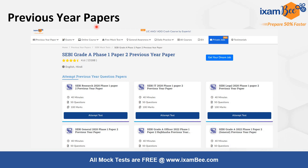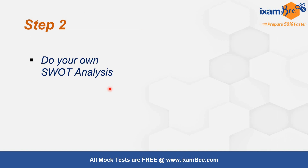You can find the previous year papers on our website. Under the previous year papers tab you will find papers for Paper 1 (QR/DI/GA), Paper 2 (Law), and also for descriptive English. You can also find PDFs attached in the description below — you can download those PDFs and check out the previous year papers.